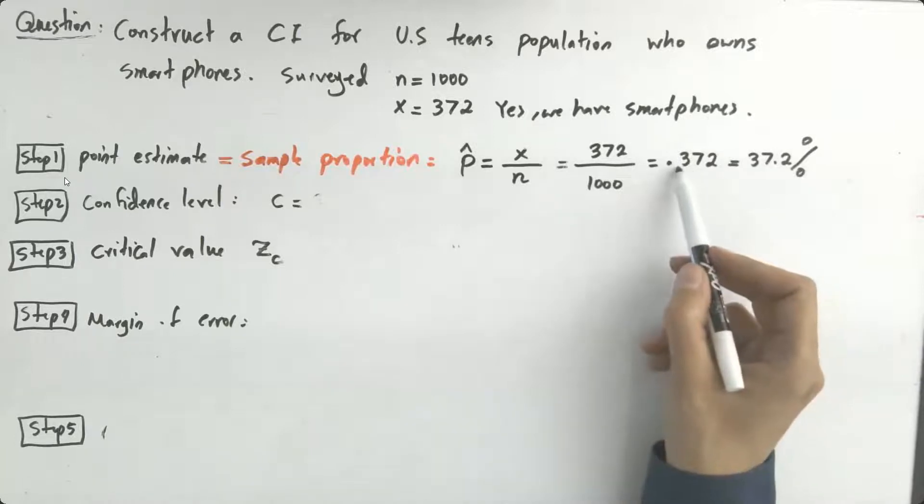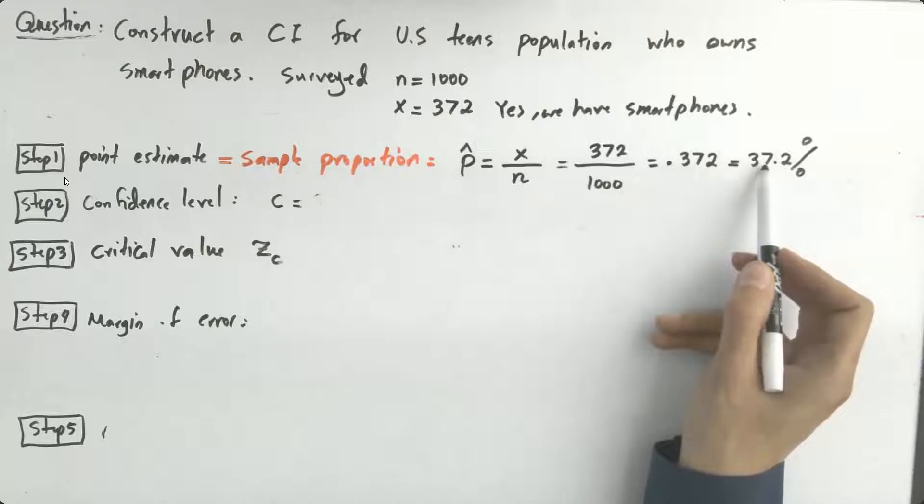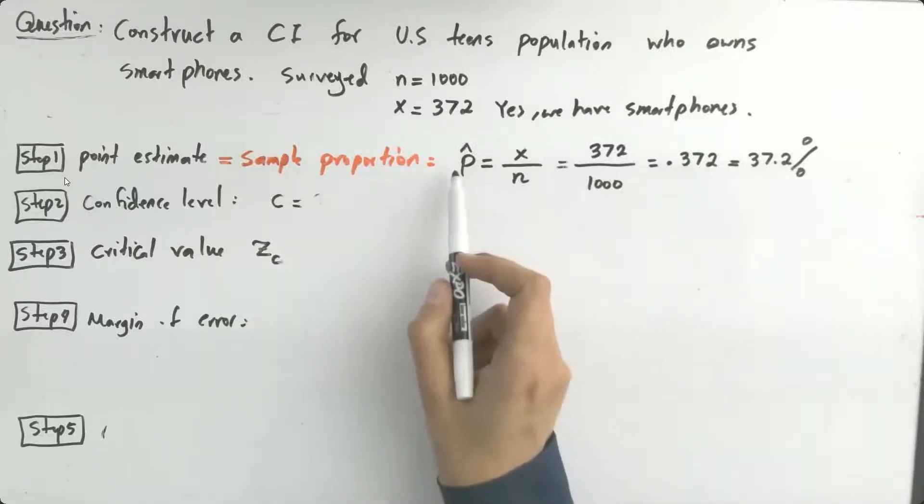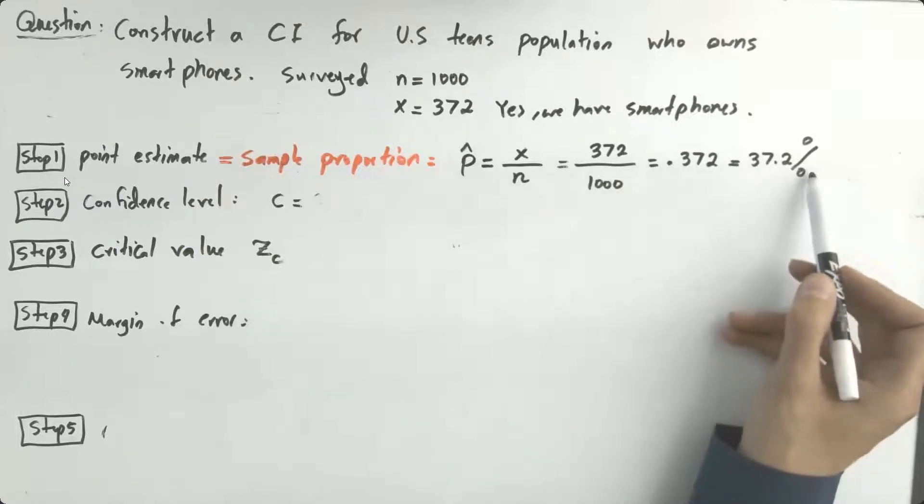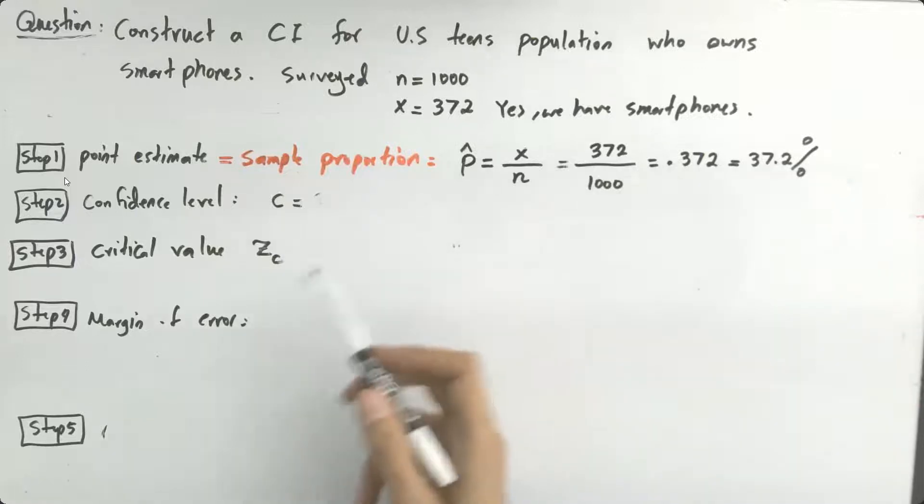0.372 or 37.2 percent your point estimate can be written as decimal or you can represent it in percentage but remember that in the rest of the calculation